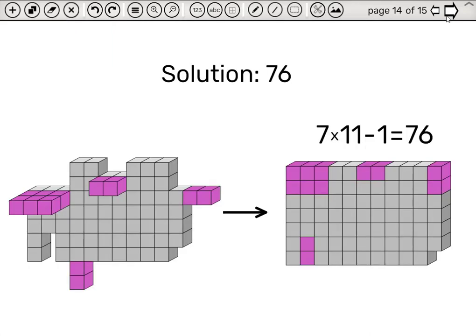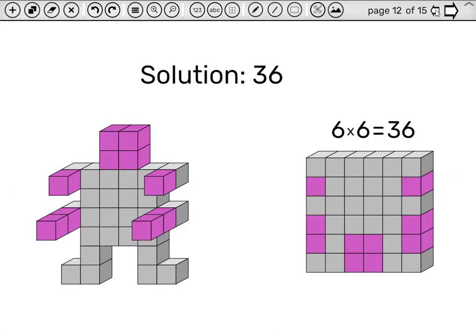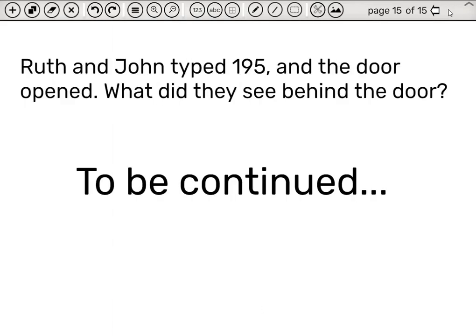Now the students just have to add up 76, 36, and the numbers of all the questions. And this is the code. Let's move on to the final page of the lesson. So the sum turns out to be 195. Ruth and John typed 195 and the door opened. What did they see behind the door? This will be continued in the next part of the lesson. See you soon.